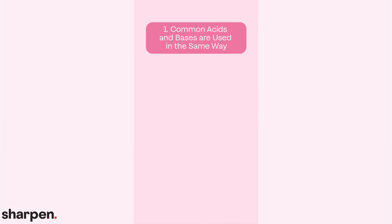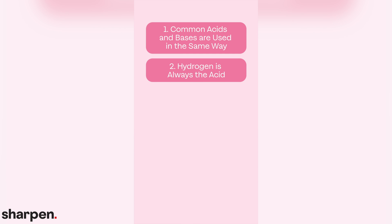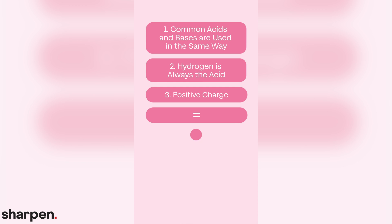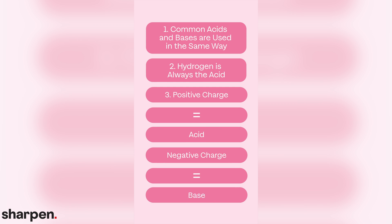It should also be noted that this theory comes with some common approximations. Number one, organic reactions are made by common acids and bases used in the same way. Number two, hydrogen will always be the acid if only one compound contains it. Number three, the compound with the positive charge will more than likely be the acid, and the negative charge will almost always be the base.